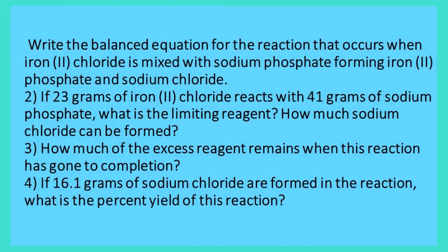The second question says: if 23 grams of iron(II) chloride reacts with 41 grams of sodium phosphate, what is the limiting reagent, and how much sodium chloride can be formed? We need to first find the limiting reagent, then proceed to find how much sodium chloride is produced.